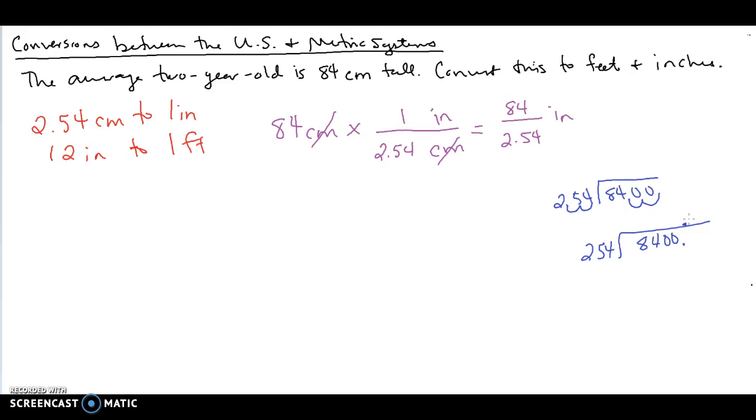So if we go through this process of dividing, well 254 won't go into 8, it won't go into 84, but it will go into 840 three times. So 3 times 254 is going to give me 762. So I'm going to subtract 762 here. That's going to leave me with 78. Let's drop down our next zero.